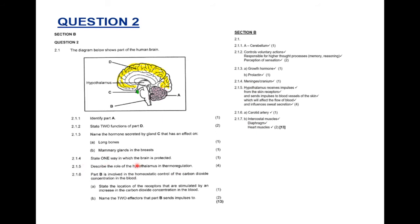Question 2.1.4: state one way in which the brain is protected for one mark. The brain and spinal cord are surrounded by meninges, and the brain is also protected by the cranium. Question 2.1.5 asks the role of the hypothalamus in thermoregulation. The hypothalamus receives impulses from the skin receptors — the hot and cold receptors — and sends impulses to the blood vessels of the skin, which affects blood flow and influences sweat secretion. It's a general answer, not specifically about a hot or cold day.